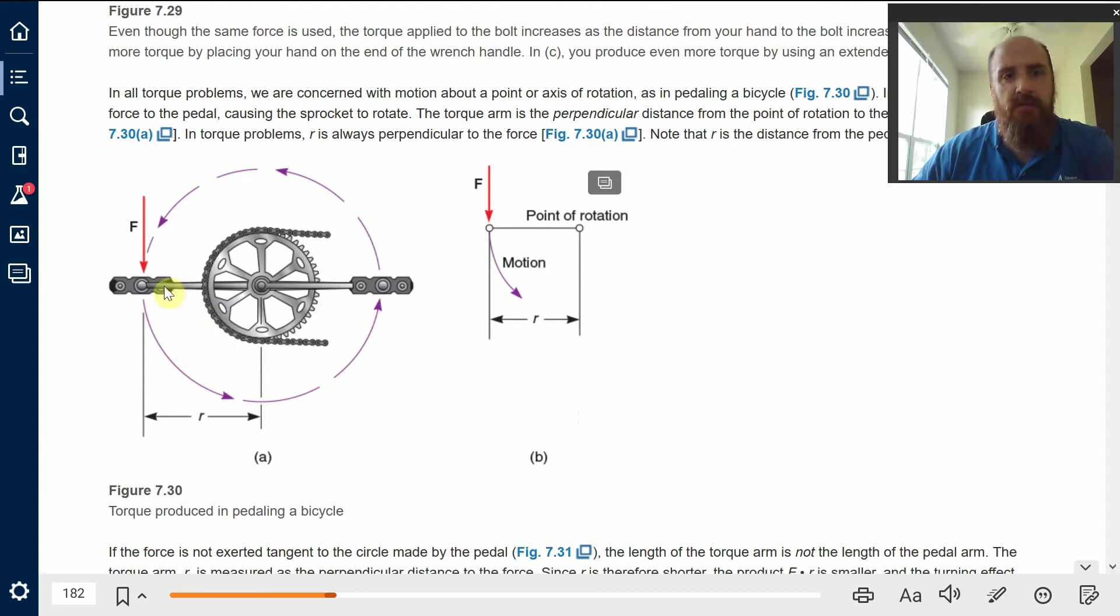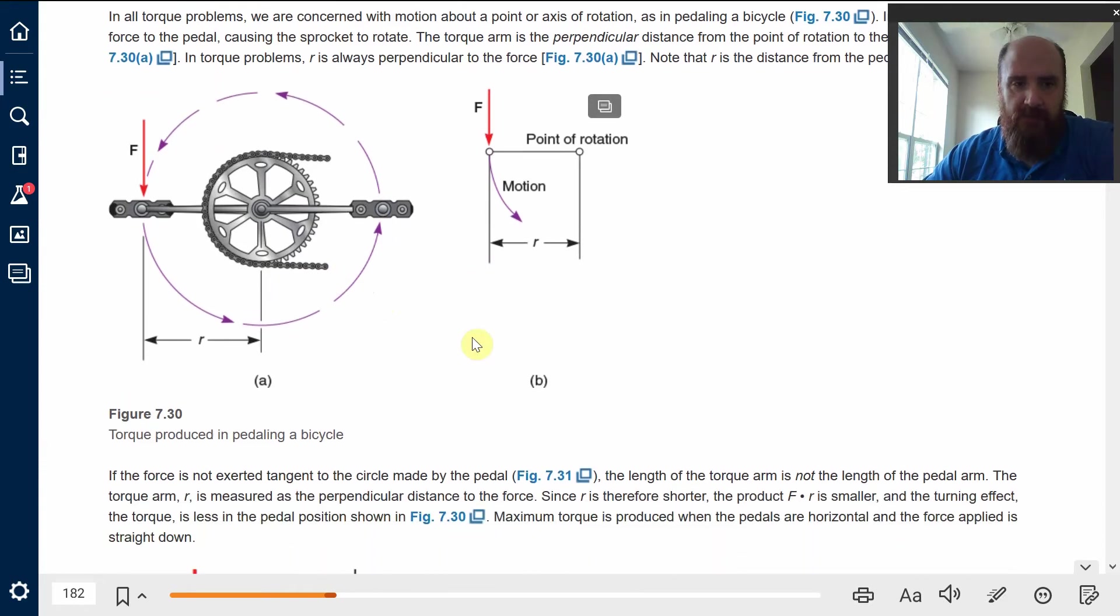Here's another picture. When you press down on a bicycle pedal, the force that's being applied is a certain distance from the center of rotation, sometimes called the axis of rotation, but the net torque would be the product of those two.